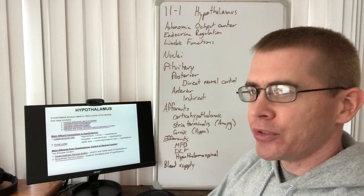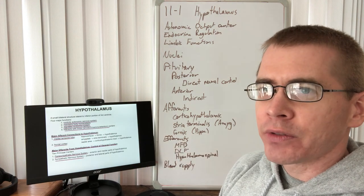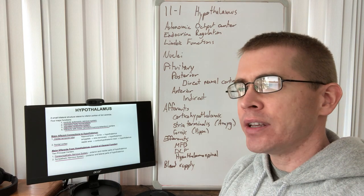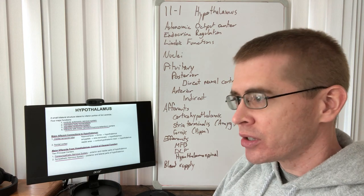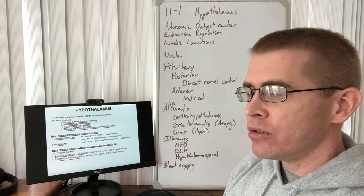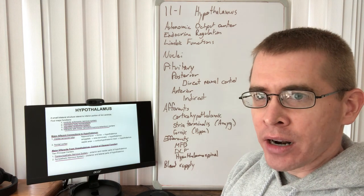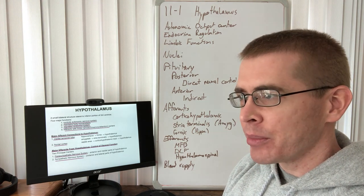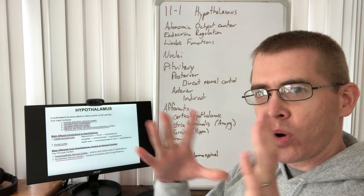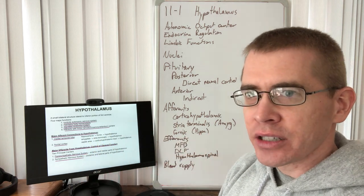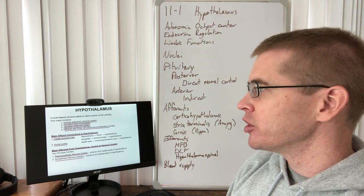As an overview, the hypothalamus has a number of different functions. It's involved in the autonomic outputs for the body. The nuclei that control those autonomics are located within the hypothalamus. The hypothalamus is not one big mushy thing. It has distinct nuclei within it that do distinct functions.